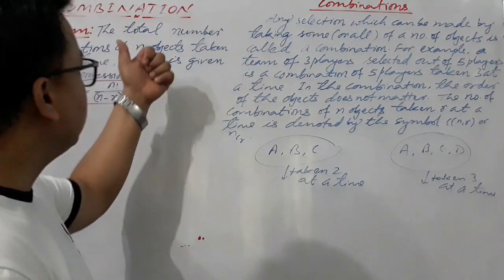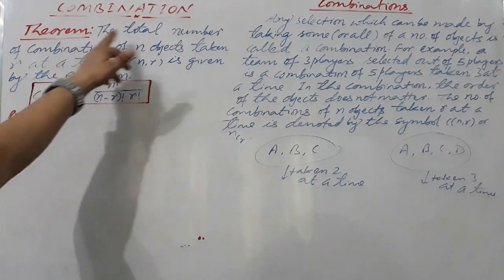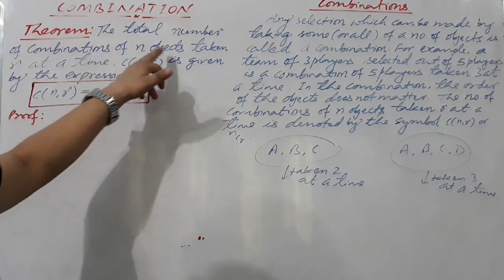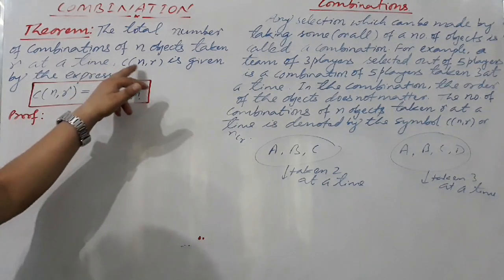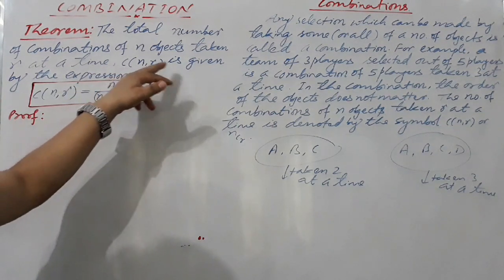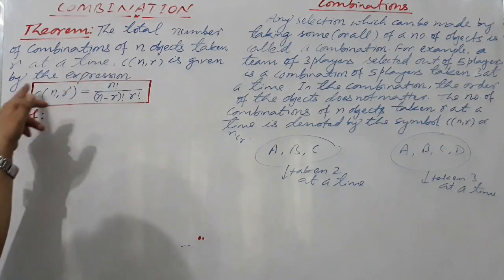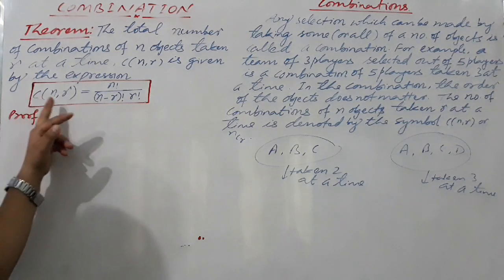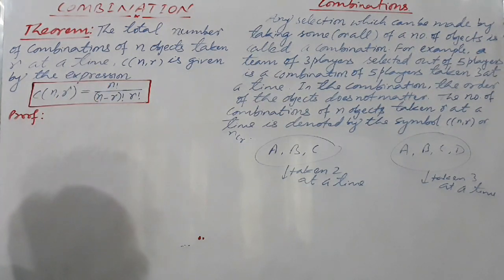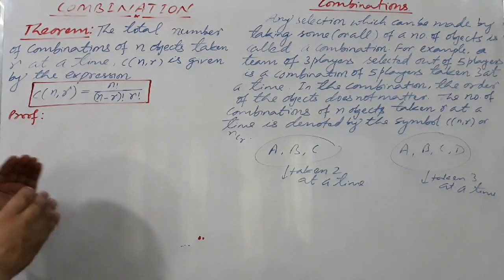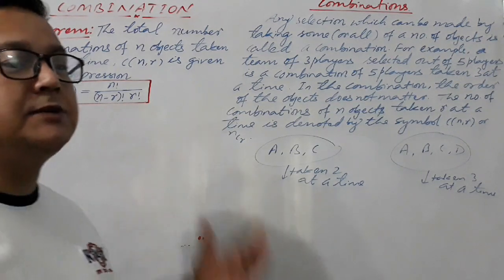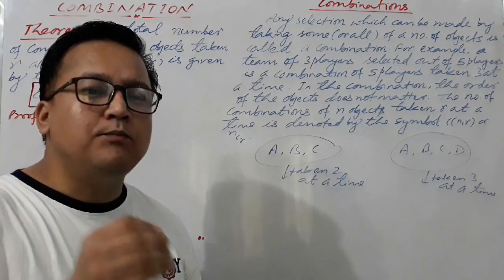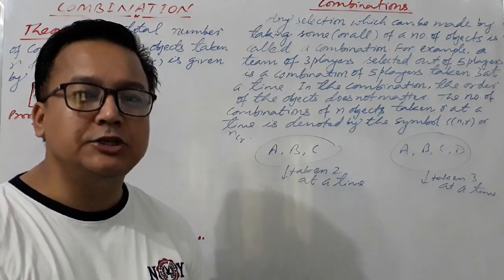The statement of the theorem is: the total number of combinations of n objects taken r at a time, or nCr, or C(n,r), is given by the expression nCr equals n factorial over factorial of n minus r into r factorial. This is the statement of today's theorem — a very important theorem in combinations.